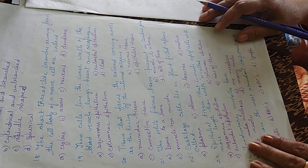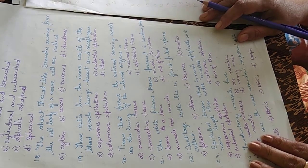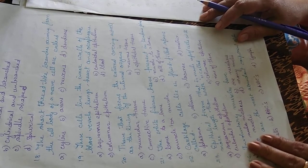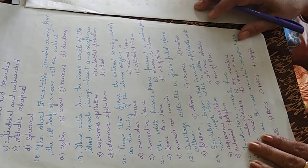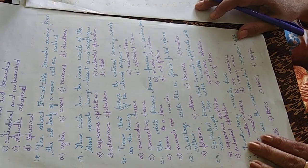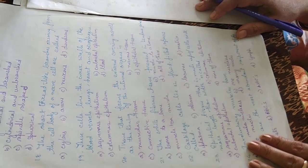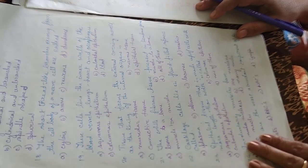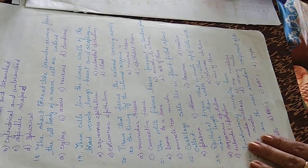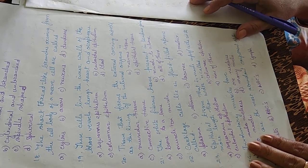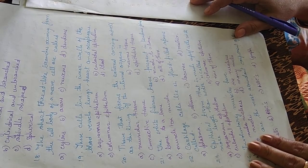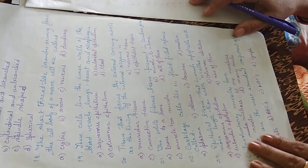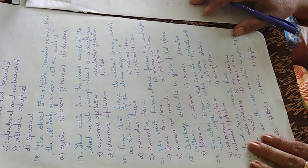The tissues that form the external covering as well as the lining of the internal organs — options are muscular tissue, nervous tissue, connective tissue, and epithelial tissue. It is the epithelial tissue which forms the external covering and the inner lining of the internal organs.